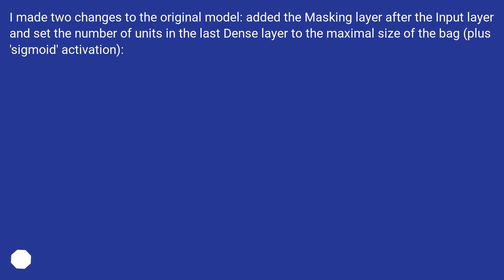I made two changes to the original model: added the masking layer after the input layer, and set the number of units in the last dense layer to the maximal size of the bag, plus sigmoid activation.